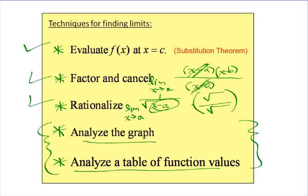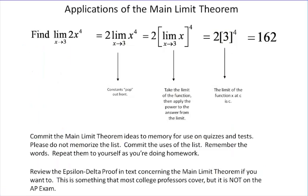So we're going to have several different ways to evaluate these limits. Let's look at an example where we can use the pieces of the main limit theorem to evaluate this limit analytically. If we're asked to evaluate the limit as x approaches 3 of 2x to the 4th, well, we have several different pieces to the main limit theorem.